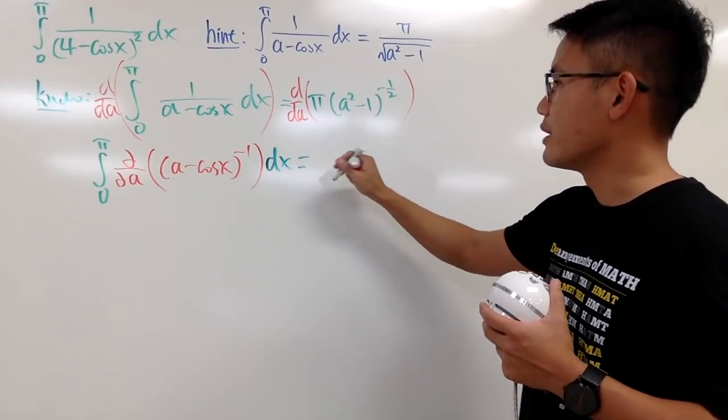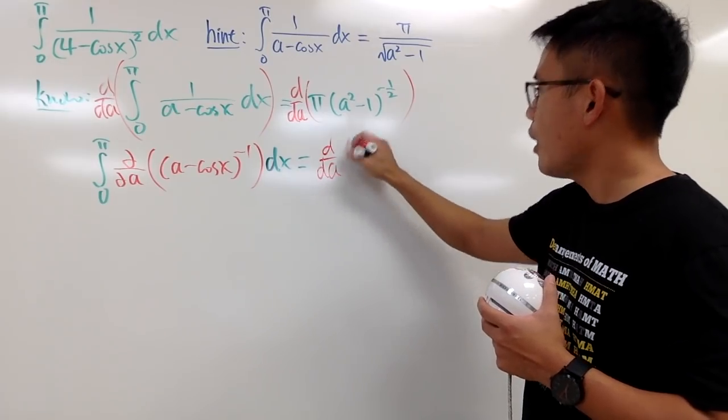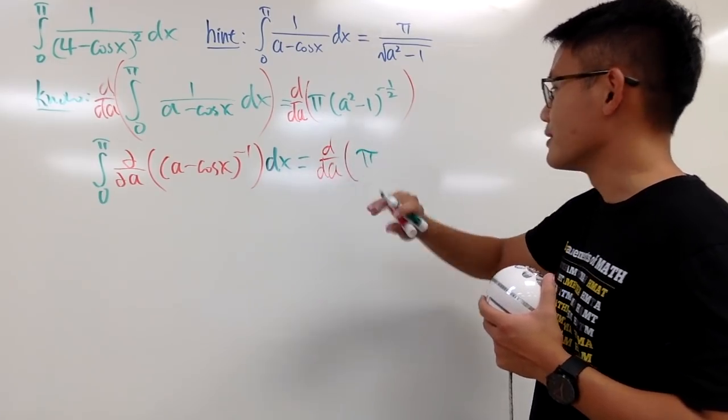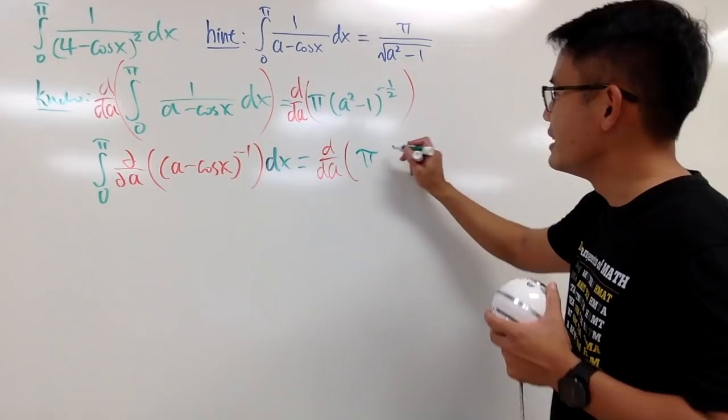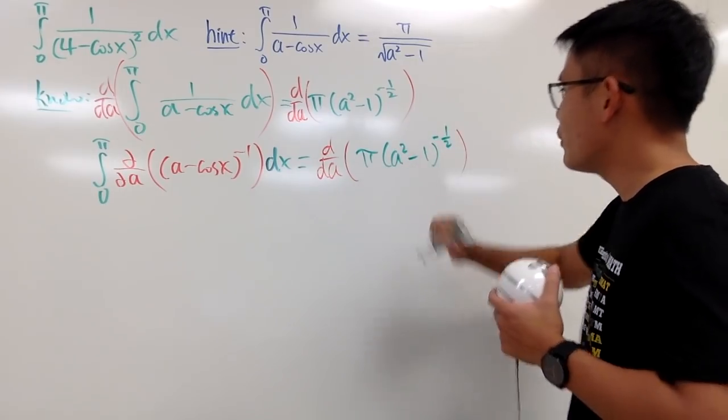And, on the right-hand side, I will just write it down again just to get ready. So, d/da of, this is just pi. Pi is a constant, so you don't have to worry about that. And this is, of course, (a squared minus 1) raised to the negative 1 half power, like this.